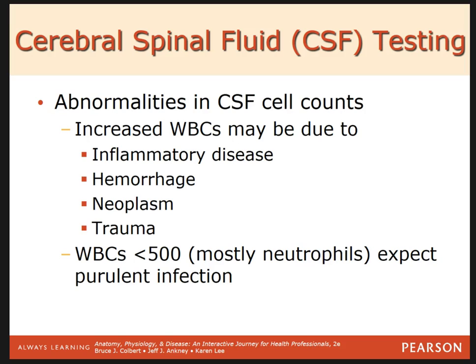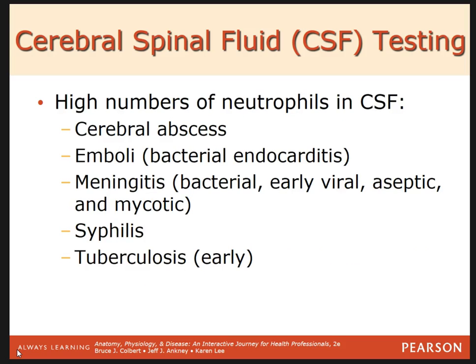An increase in white blood cells in the cerebral spinal fluid could be due to an inflammatory disease, a hemorrhage, cancer, neoplasm or tumor, or trauma. If the white blood cells are less than 500 and mostly made of neutrophils, there is generally a purulent infection. A high number of neutrophils in the CSF could be due to cerebral abscess and embolism such as bacterial endocarditis, meningitis, bacterial meningitis, early viral meningitis, aseptic or mycotic meningitis, syphilis, or early stages of tuberculosis.